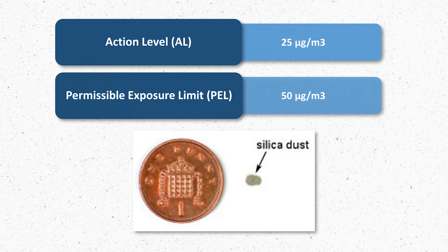To give you an example of what amount of silica dust we are talking about, take a look at this penny and then the small amount of silica dust next to the penny. The pile of silica dust represents the levels we are talking about, which is a very small amount.